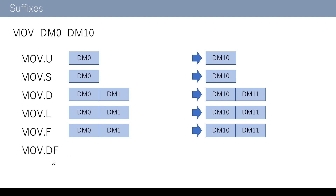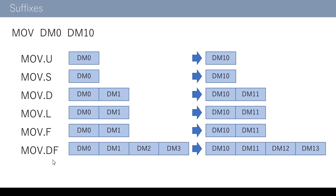Finally, move.df is a suffix for a double precision floating point type occupying four words. Therefore, four words from DM0 to DM3 are copied to four words from DM10 to DM13. As you can see, the range of occupied devices varies depending on the trailing suffix of move.